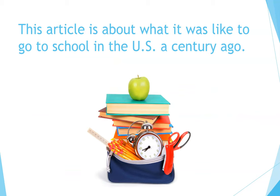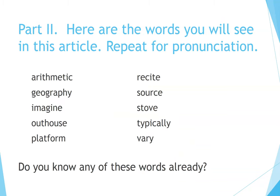This article is about what it was like to go to school in the U.S. a century ago. Part 2: Here are the words you will see in this article. Repeat for pronunciation: Arithmetic, Geography, Imagine, Outhouse, Platform, Recite, Source, Stove, Typically, Vary. Do you know any of these words already?